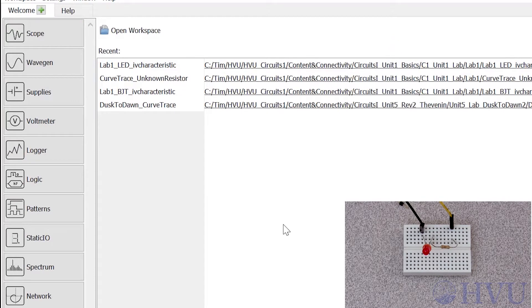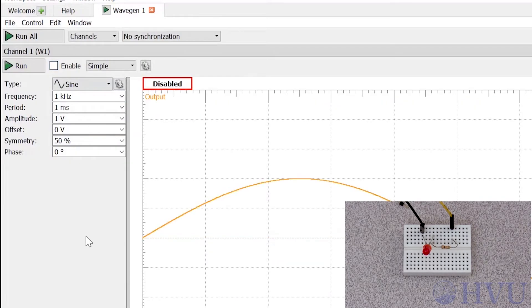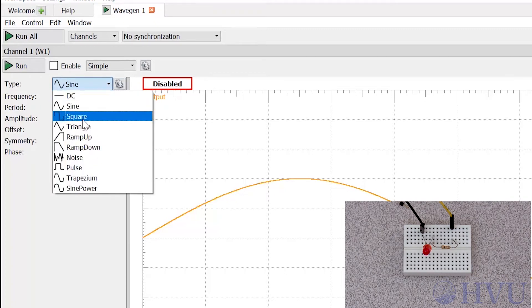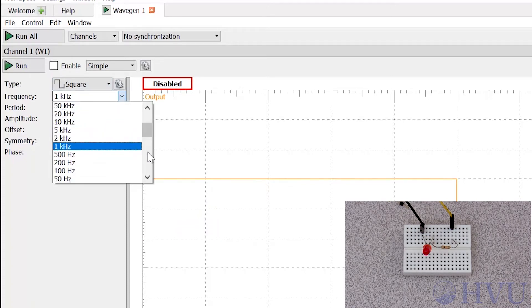I'll start by applying a square wave with a frequency of 1 Hertz and an amplitude that goes from negative 4 volts to positive 4 volts. To control the waveform generator, click on the Wave Gen button on the Welcome tab. To create our signal, expand the drop-down menu next to the signal type and select Square. To get a frequency of 1 Hertz, choose 1 Hertz from the drop-down menu next to Frequency.